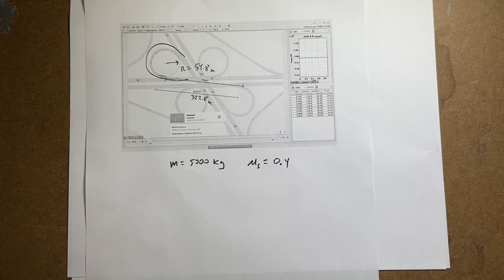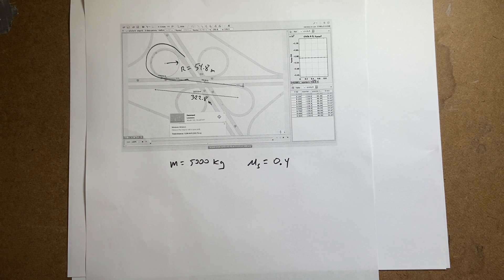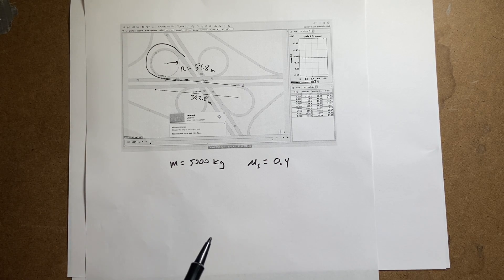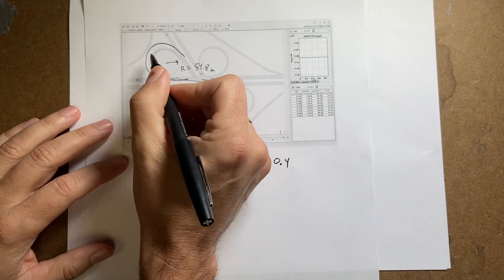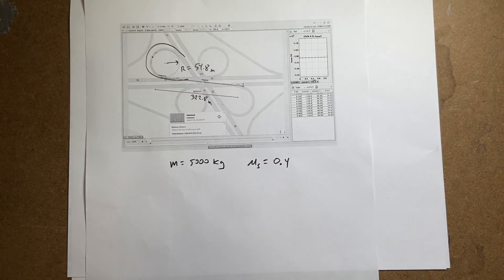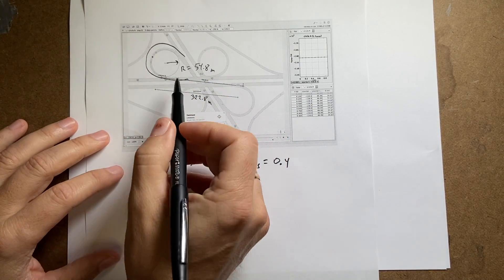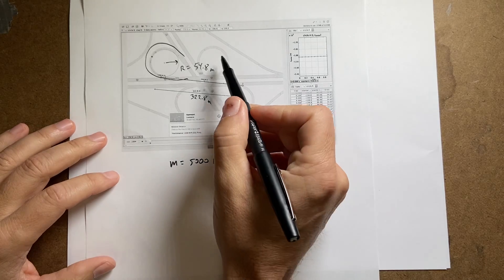And the question is, what kind of speed should you have for the car? So I want to find the appropriate speed of the car at this point right here. And you'll notice that it's not a circle, right? This is not a complete circular path.